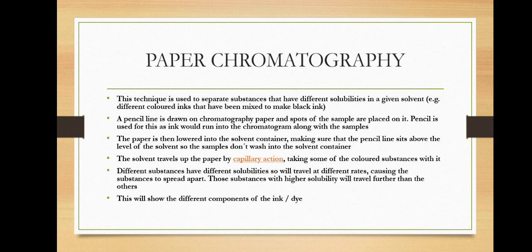The procedure: first, a pencil line is drawn on the chromatography paper and spots of the sample are placed on it. Pencil is used because ink would run into the chromatogram along with the samples. The paper is then lowered into the solvent container, making sure the pencil line sits above the level of the solvent so the samples don't dissolve directly into it.